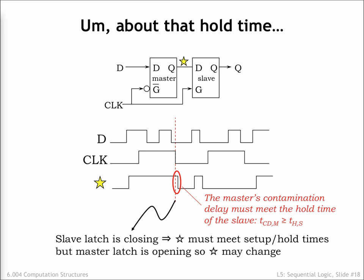Doing the necessary analysis can be a bit tricky since we have to consider manufacturing variations, as well as environmental factors such as temperature and power supply voltage. If necessary, extra gate delays can be added between the master and slave latches to increase the contamination delay on the slave's input relative to the falling clock edge. Note that we can only solve slave latch hold time issues by changing the design of the circuit.